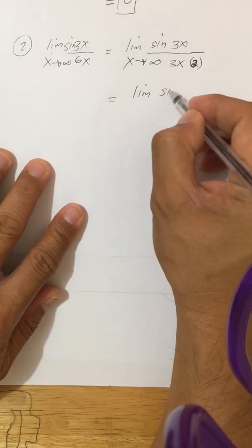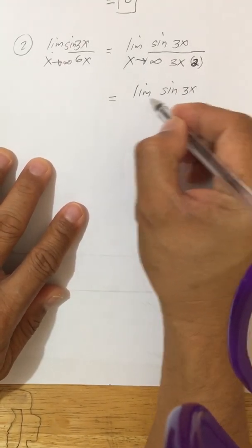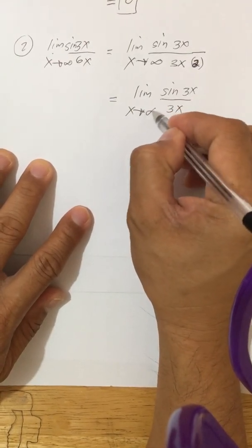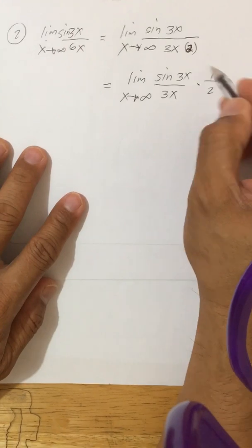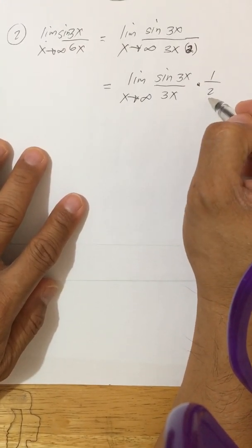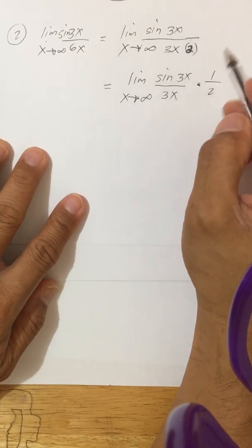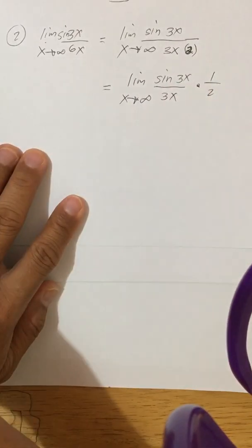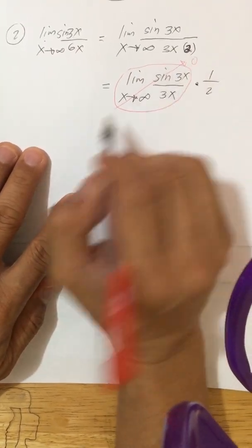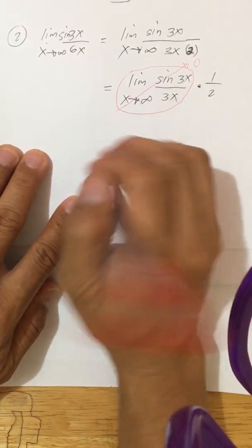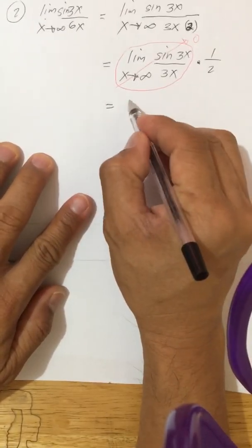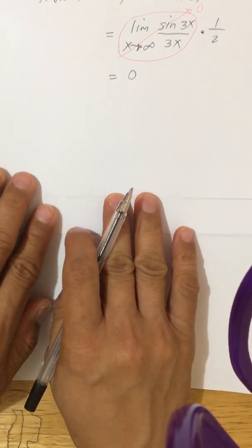We rewrite this as the limit of sine 3x over 3x as x approaches infinity, multiplied by 1 over 2. We know that the limit of sine 3x over 3x is 0, so 0 multiplied by 1 half gives us equal to 0.